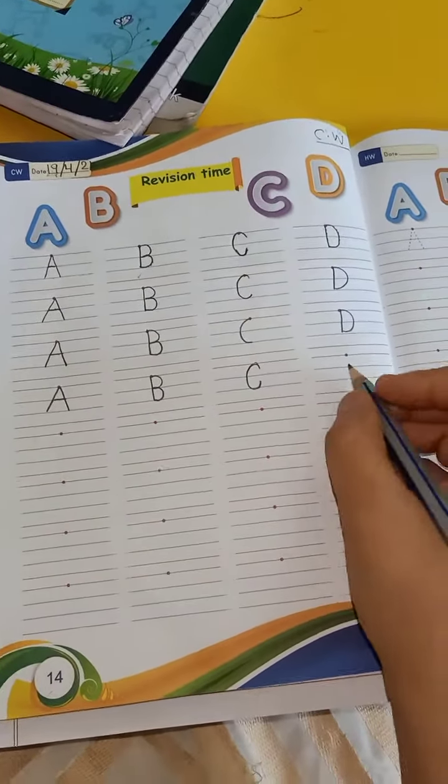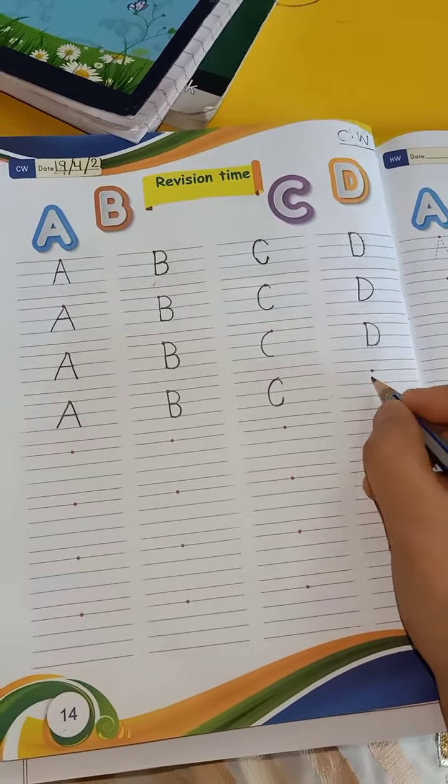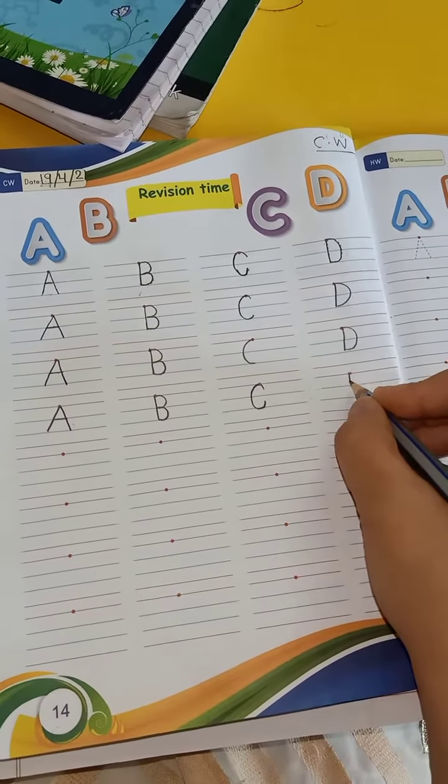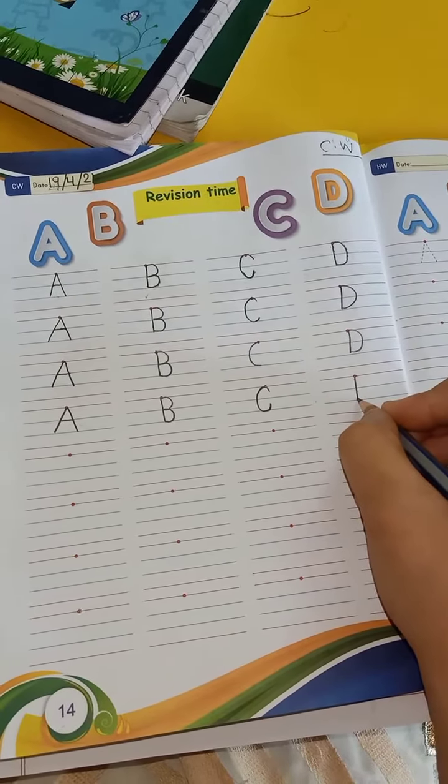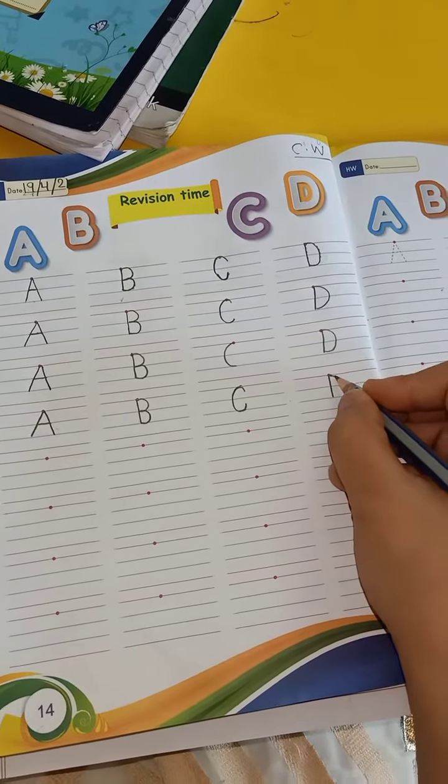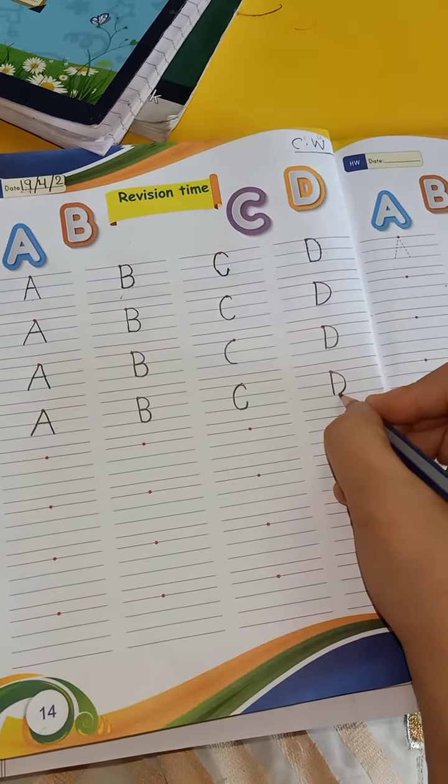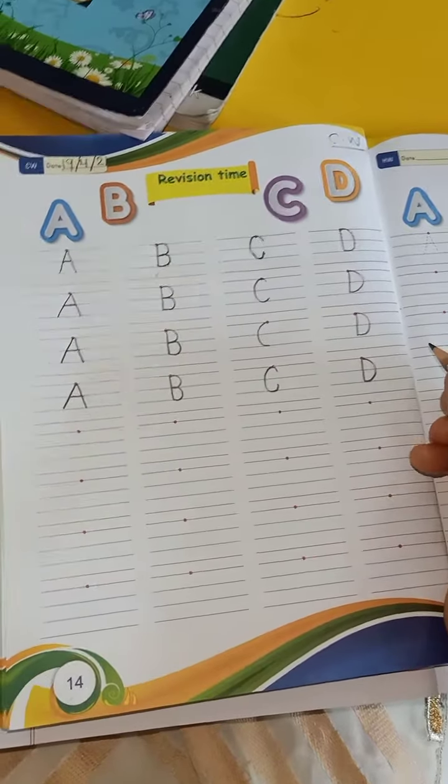D. A-B-C-D. D says D. So make a standing line from capital line to base line and make a curve from capital line to base line. It's a letter D.